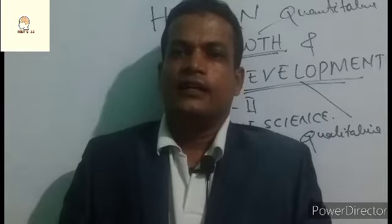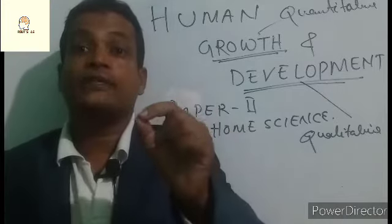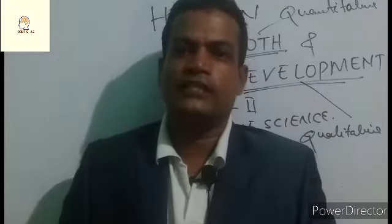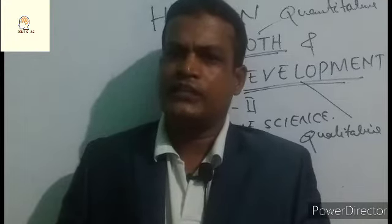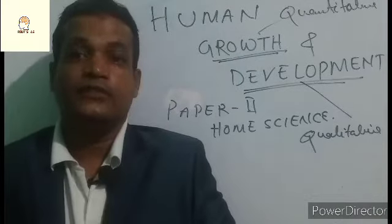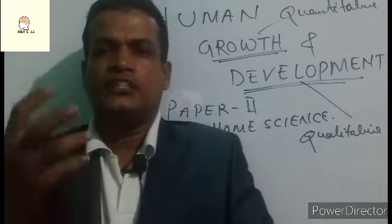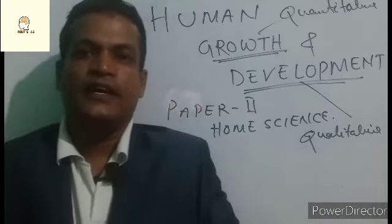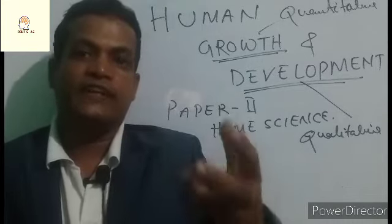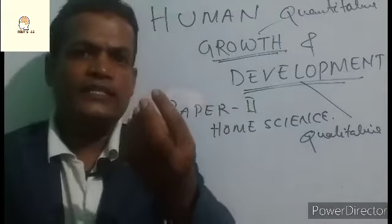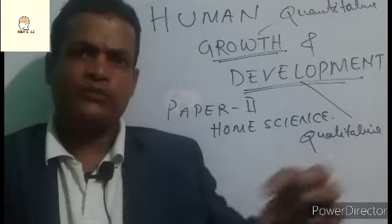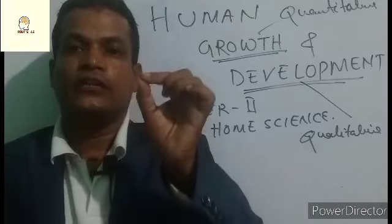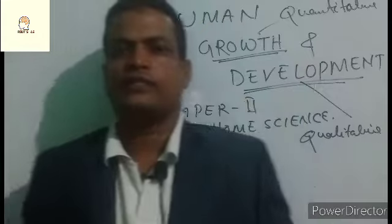Actual fertilization takes place in the fallopian tube, otherwise called the oviduct of the female reproductive tract. Within 24 hours of fertilization, the zygote divides rapidly, forming a ball of cells called morula. The morula again divides forming a structure with fluid in the middle called blastocyte. At the blastocyte stage, let's draw the figures to explain.